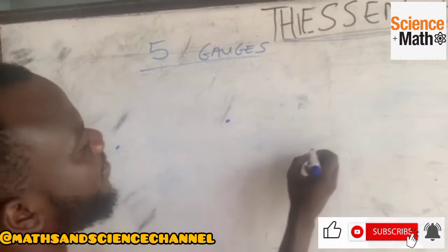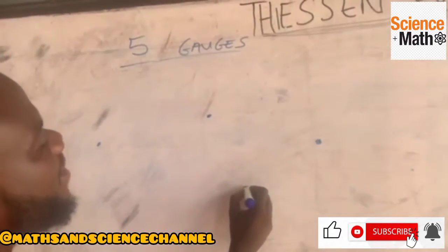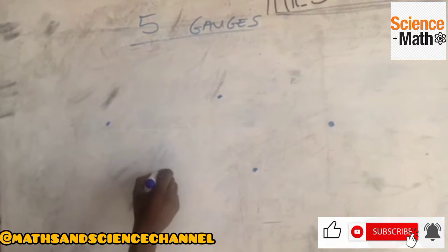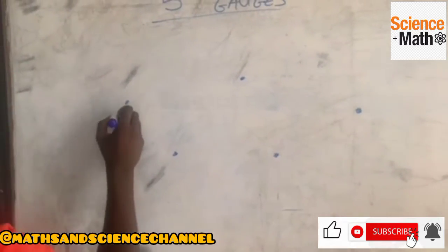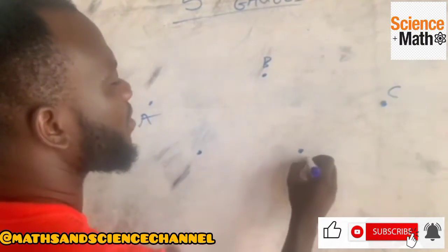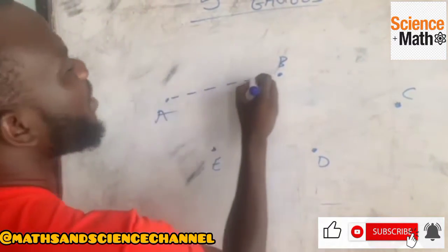Point B, point C, point D, and what, point E. So you try to join them with dotted lines.